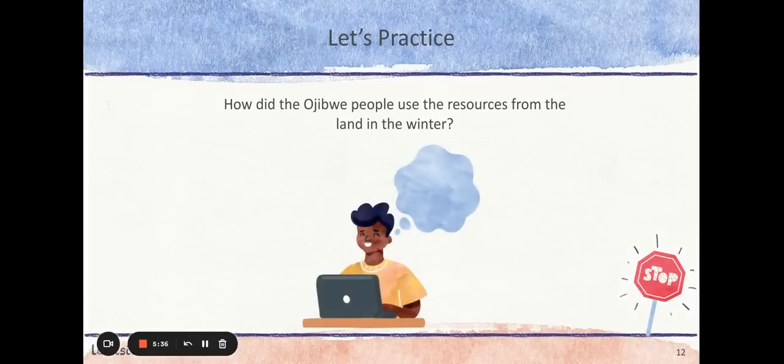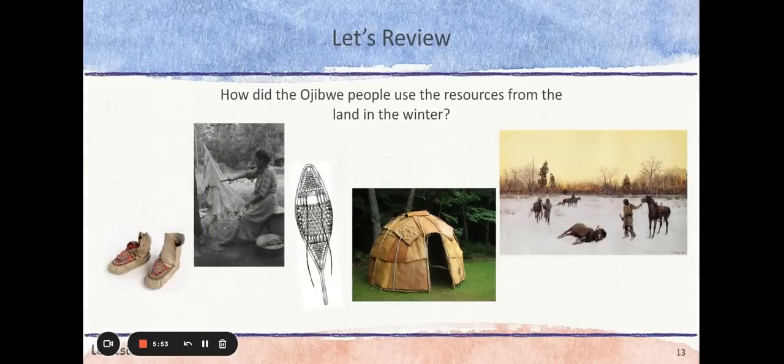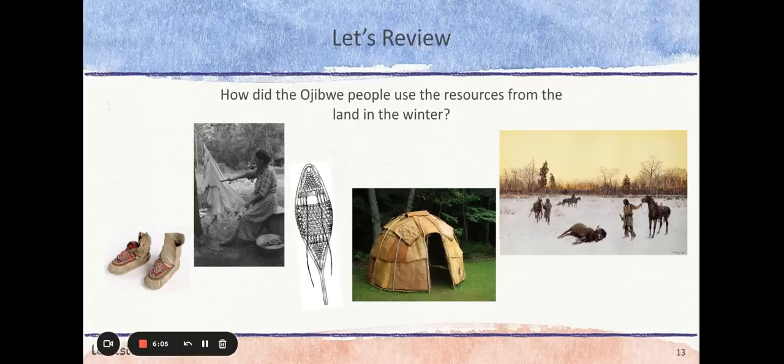Now you're ready to think about how the Ojibwe people met their needs during the winter. Pause this video to record your answers on your handout at the third stop sign, then hit play when you are ready to continue. You may have included using animal hides, birch bark, and other natural resources to cover homes, repair tools, snowshoes and moccasins, or sew clothes as the way the Ojibwe used resources from the land during the winter months. Other ideas could include hunting, trapping, and fishing.